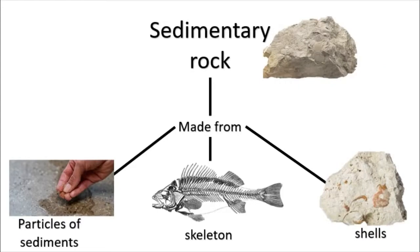The next classification of rock is called a sedimentary rock. Sedimentary rocks are made of particles of sediments, maybe skeletons and some shells. The next slide will show the different types of sedimentary rocks and the process of how sedimentary rocks are made.